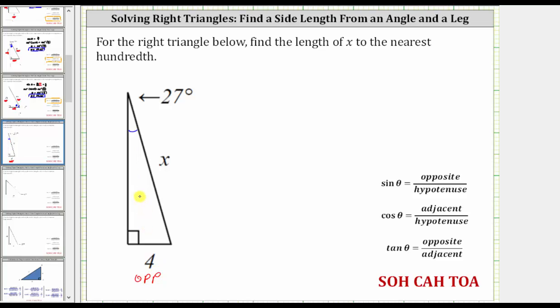The hypotenuse is always opposite the right angle. So because this is the right angle, the hypotenuse is this side here with a length of x units.